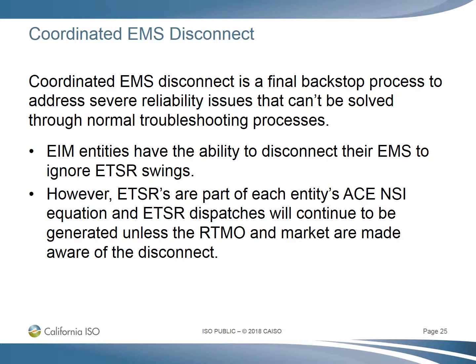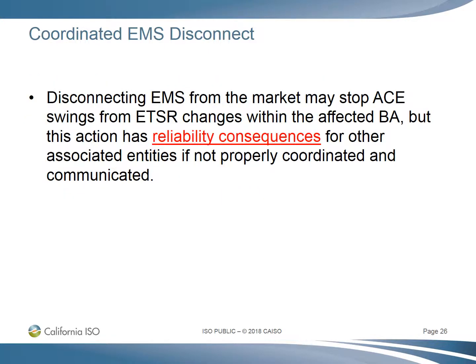Coordinated EMS disconnect is a final backstop process to address severe reliability issues that can't be solved through normal processes. EIM entities have the ability to disconnect their EMS to ignore ETSR swings. However, ETSRs are part of each entity's ACE net scheduled interchange equation, and ETSR dispatches will continue to be generated unless the RTMO and the market are made aware of the disconnect. Disconnecting EMS from the market may stop ACE swings from ETSR changes within the affected BA, but this action has reliability consequences for other associated entities if it is not properly coordinated and communicated.